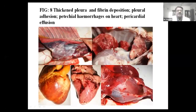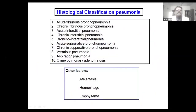In septicemic cases along with pneumonia, you will find hemorrhages, pericardial effusion, or hydropericardium. The classification of pneumonia includes: acute fibrinous bronchopneumonia, chronic fibrinous bronchopneumonia, acute interstitial pneumonia, chronic interstitial pneumonia, bronchointerstitial pneumonia, acute suppurative bronchopneumonia, chronic suppurative bronchopneumonia, verminous pneumonia, aspiration pneumonia, and ovine pulmonary adenomatosis. Along with these, other lesions include atelectasis of the lungs, hemorrhage, and emphysema.